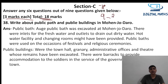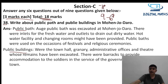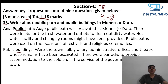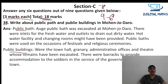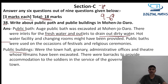Nine questions are given and you have to attempt any six. Question 31: Write about public bath and public buildings in Mohenjo-daro. The public bath system mainly had fresh water outlets. The dirty water was drained out through drains.